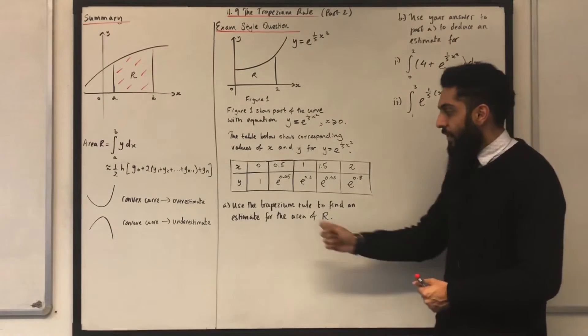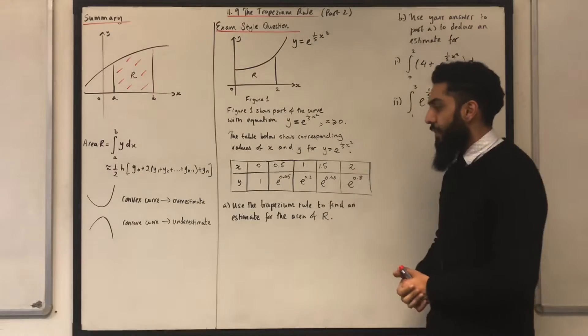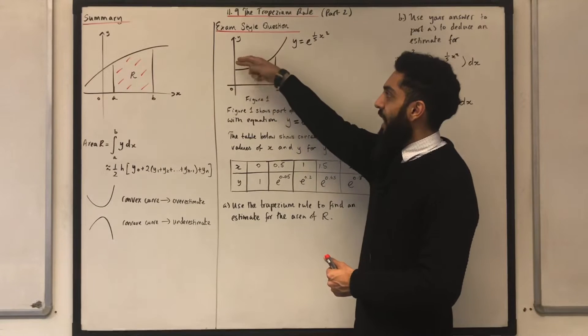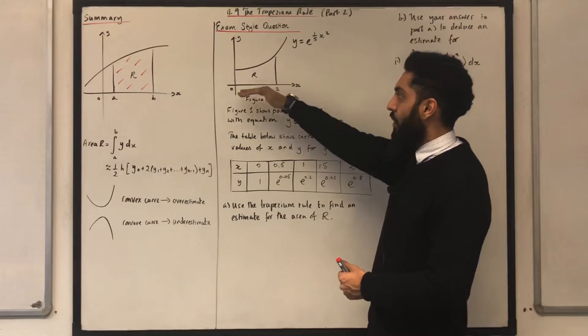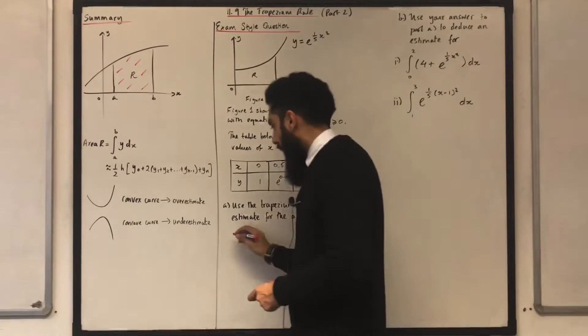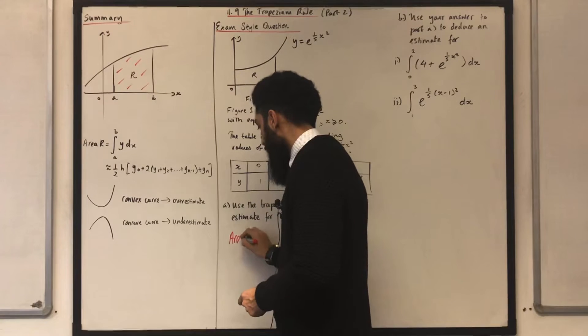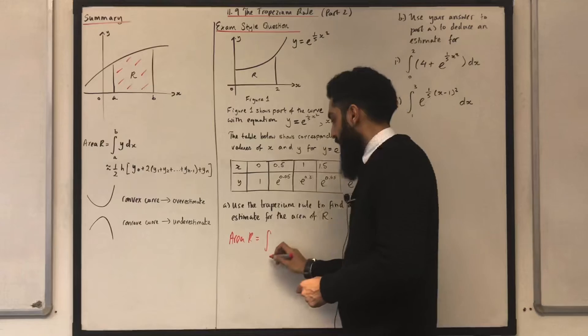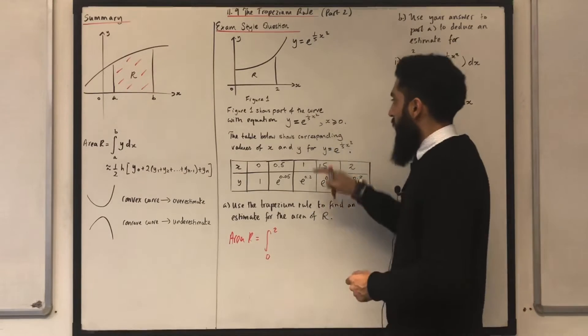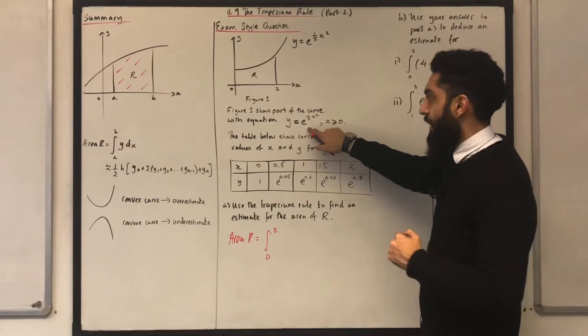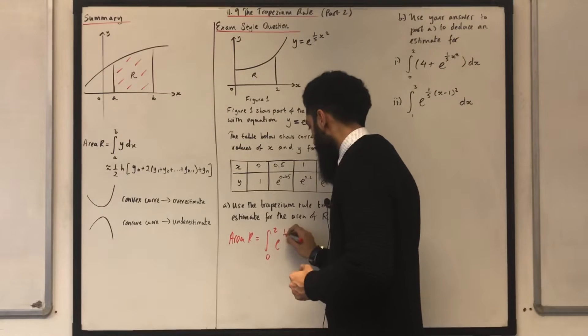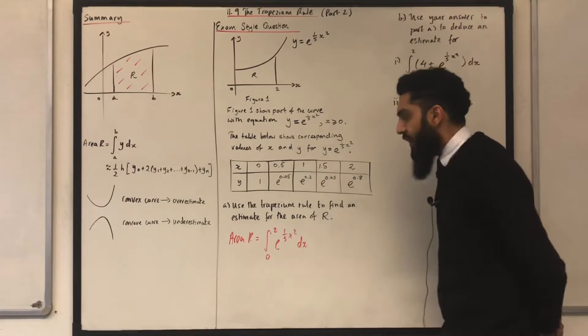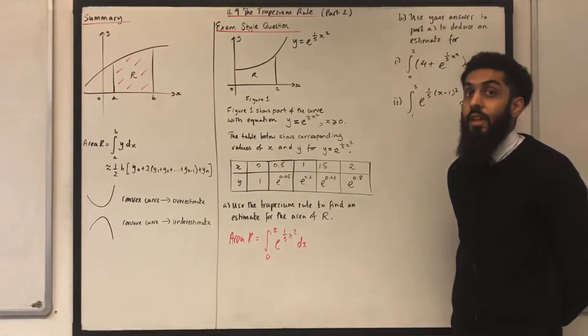Part A, use the Trapezian Rule to find an estimate for the area of R. The area R is bounded by the curve, the line x equals 0, the line x equals 2 and the x-axis. Area R is given by the integral from 0 to 2 of y, which is e to the power 1 over 5x squared dx. I want to estimate this particular area using the Trapezian Rule.